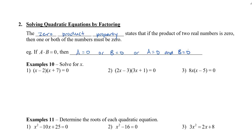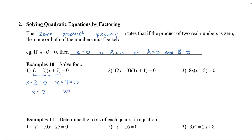Let's take a look at some examples. In this one here, we have the two factors already set up for multiplication. So either x minus 2 equals zero, or x plus 7 equals zero. Solving each of these little equations, x will equal 2, and we also have x equals negative 7.